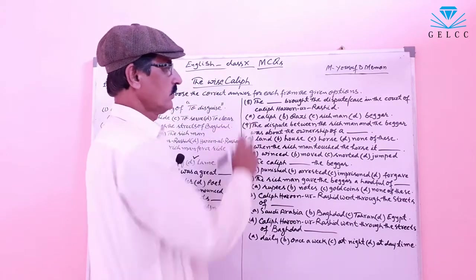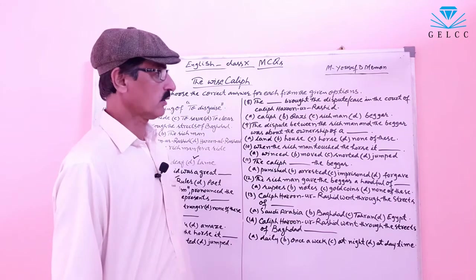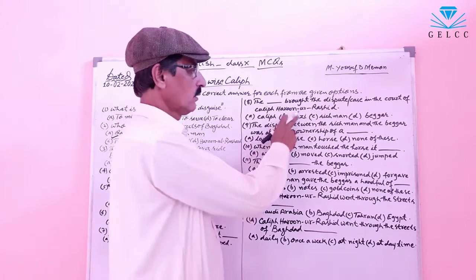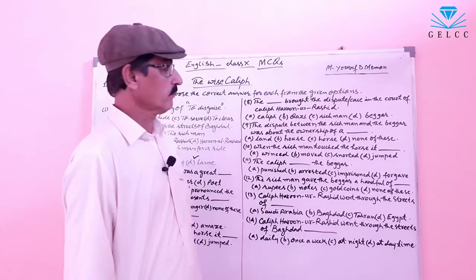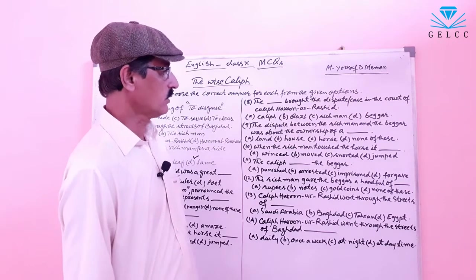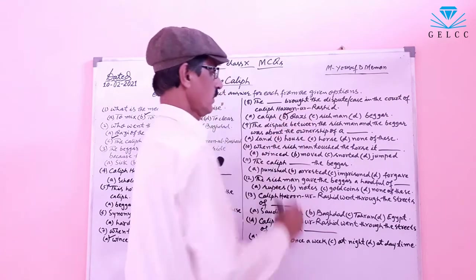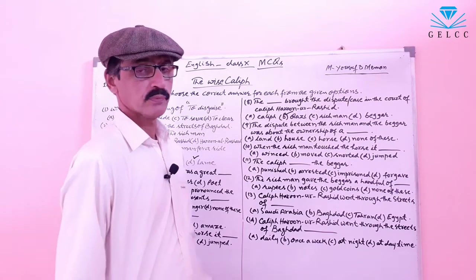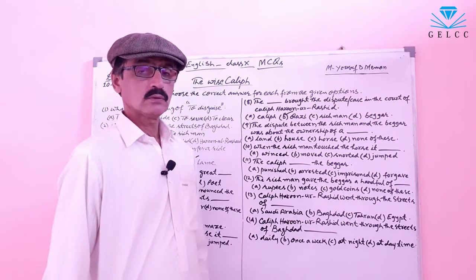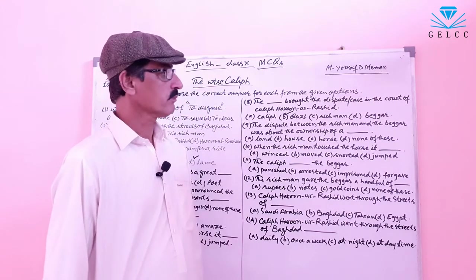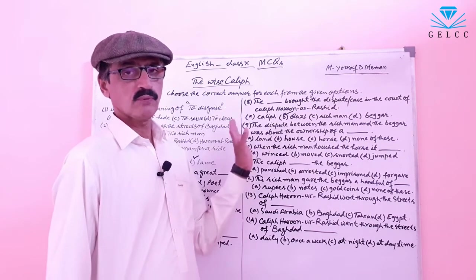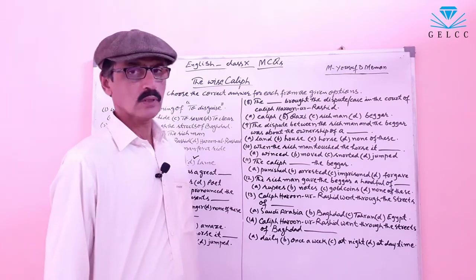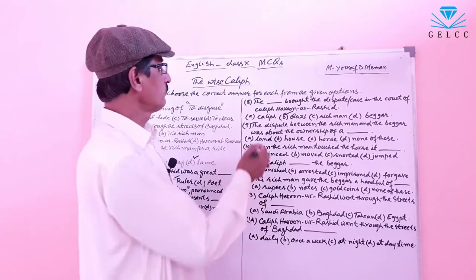Number 8: Who brought the dispute or case in the court of Caliph Harun al-Rashid? Options: A: Caliph. B: Qazi. C: Rich man. D: Beggar. The correct answer is option B — Qazi. The Qazi brought the dispute or case in the court of Caliph Harun al-Rashid.